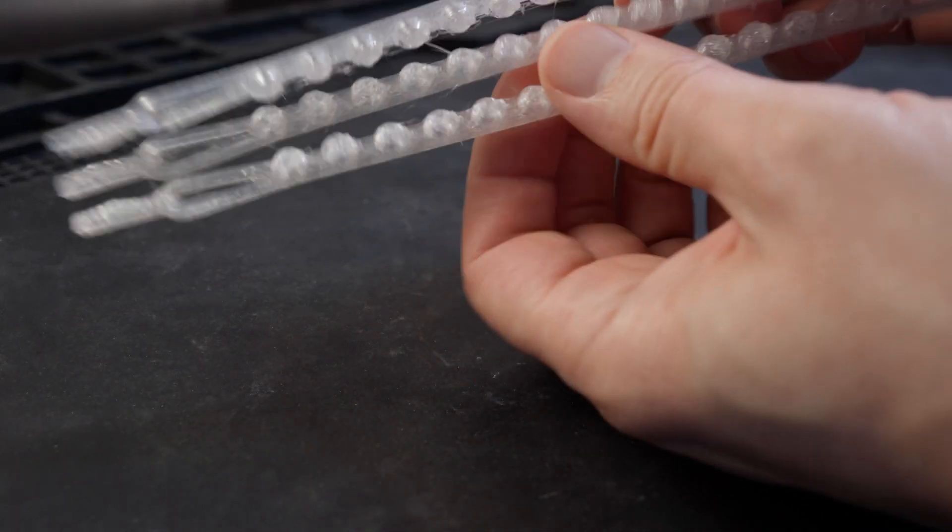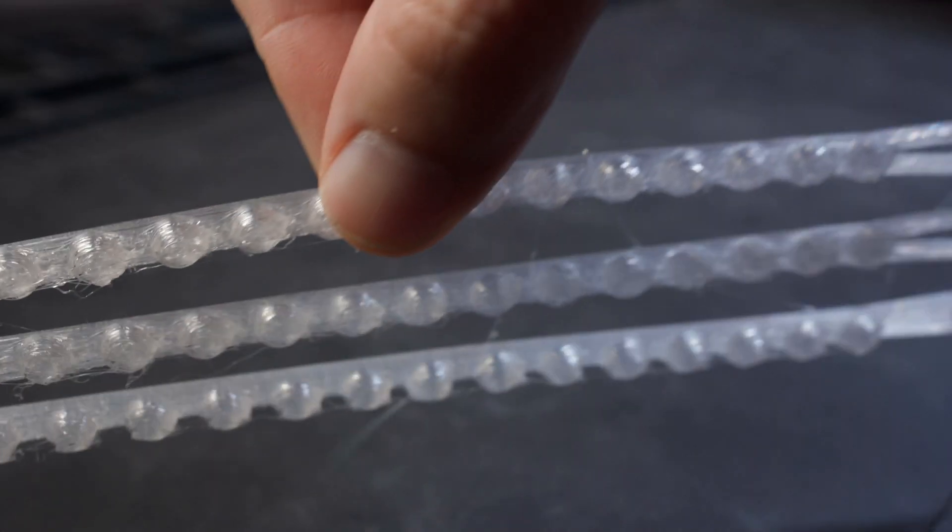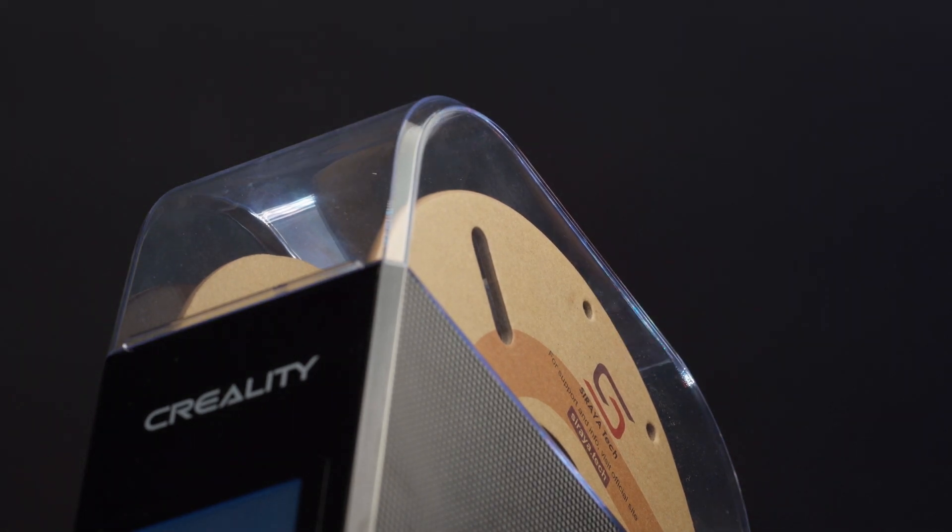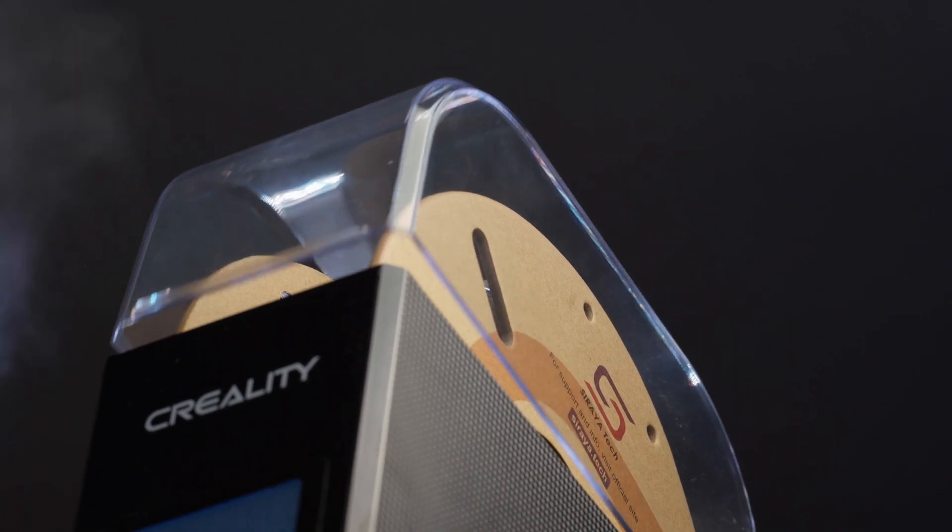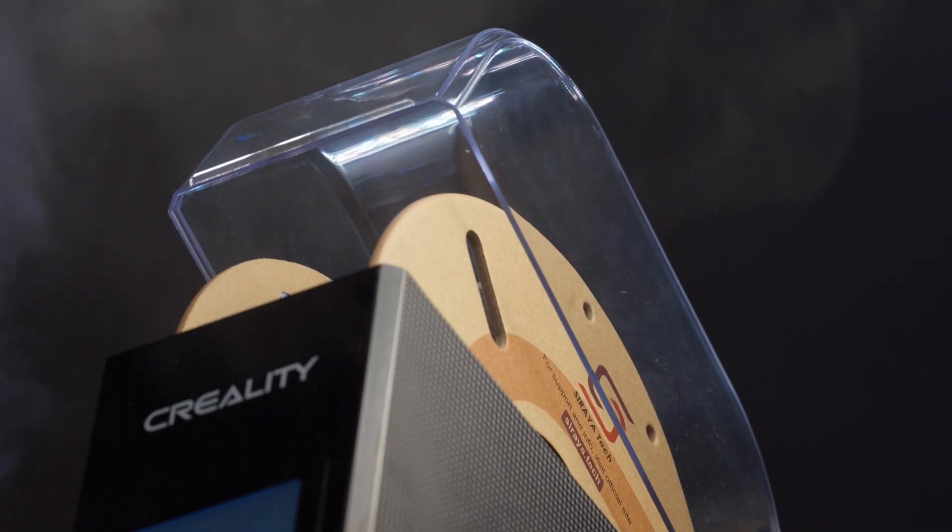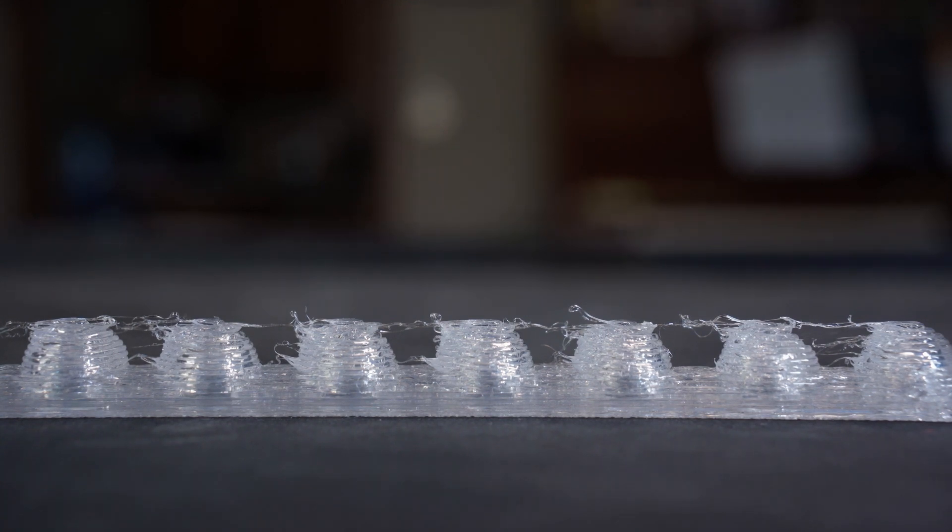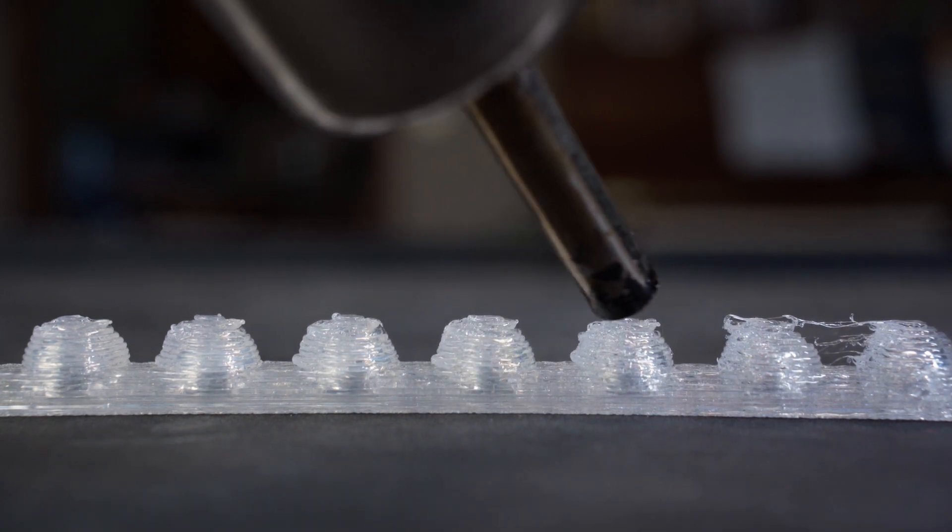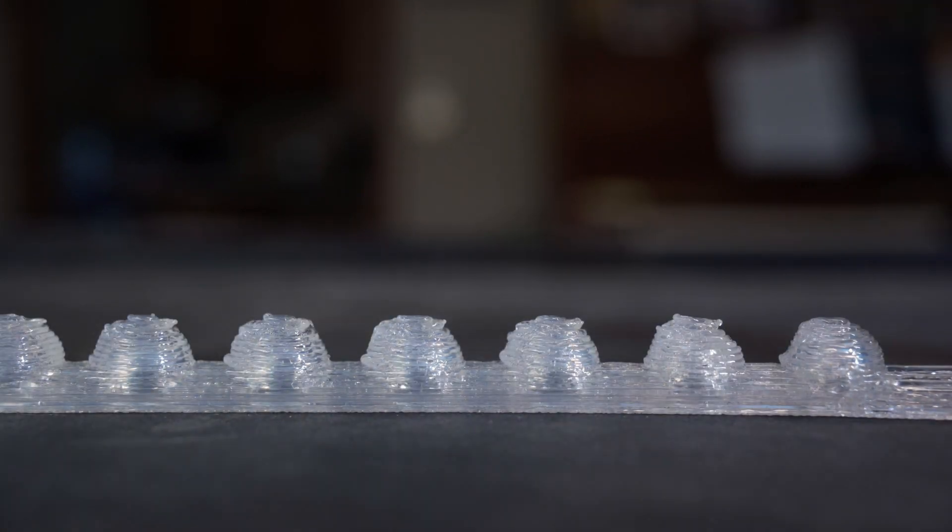Our 85a TPU has a lot of stringing between the spheres, so we blast them with hot air. This melts the stringy parts fastest, so the main shape isn't messed up.